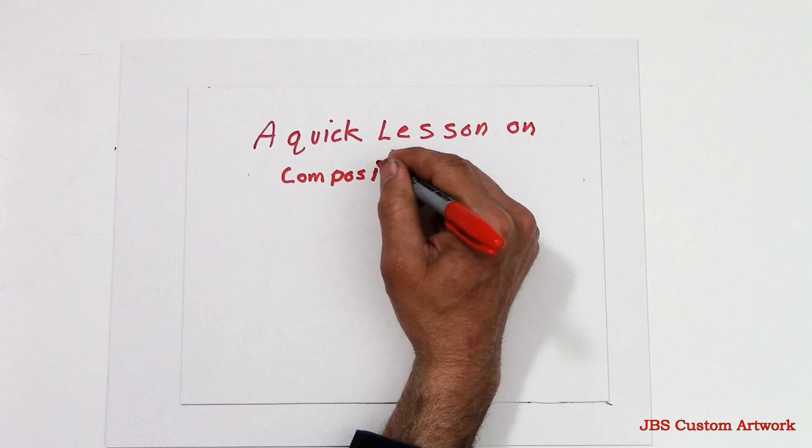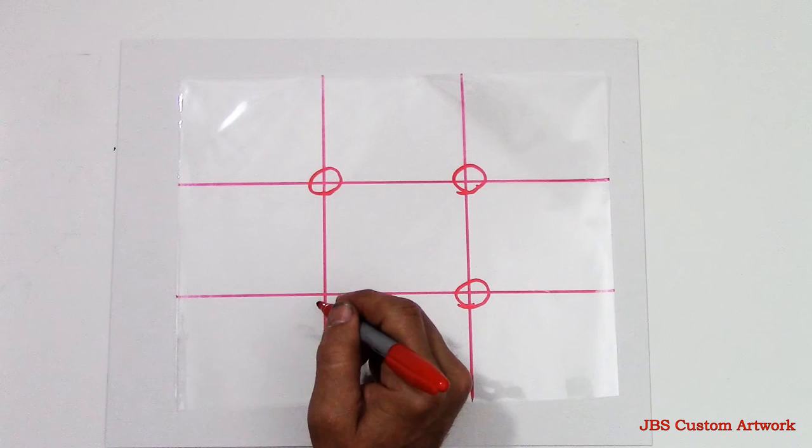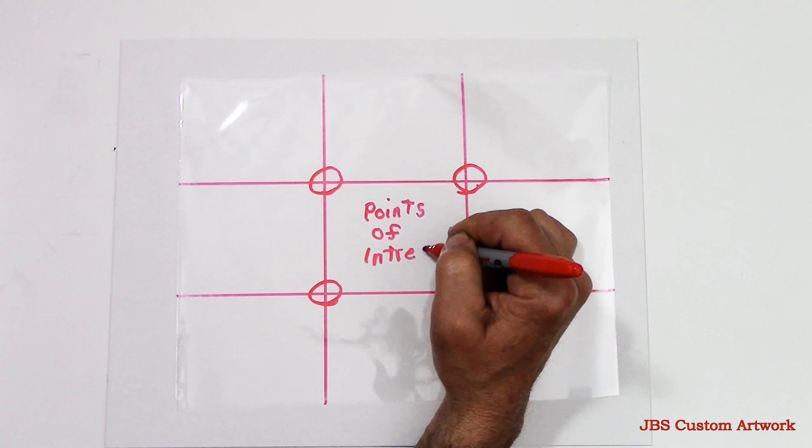The rule of thirds has been used by photographers for years and it's a very helpful trick whenever you're starting a painting. First you start by dividing your picture into nine segments, and where the lines intersect, that's where your points of interest are.